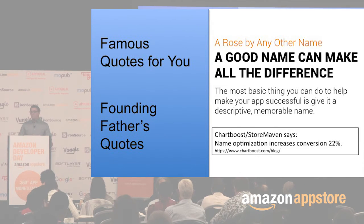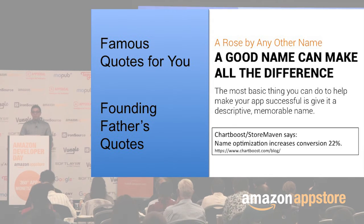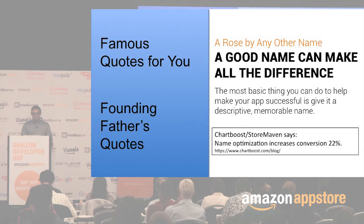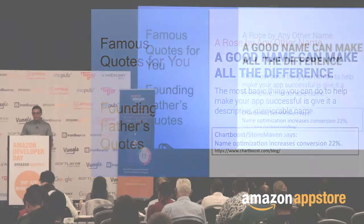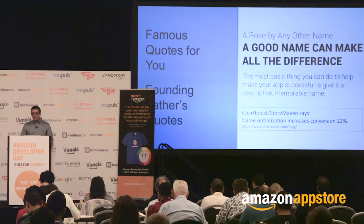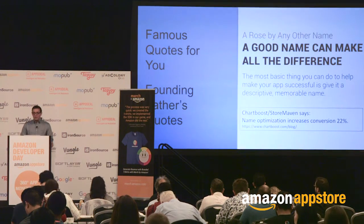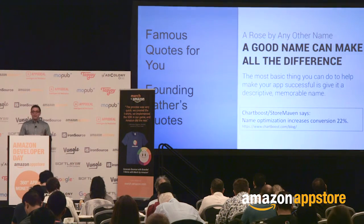For example, a quote app that tried a couple different options — originally called 'Famous Quotes for You,' not a great response. Changing it slightly, giving it more specificity, calling it 'Founding Fathers Quotes,' actually improved downloads quite a bit. Chartboost has some great statistics where they've actually quantified this improvement — they've seen conversion rise as much as 22%. A rose by any other name may smell as sweet, but if you pick the right name, a lot more people will want a bouquet of your flowers than the next guy's.